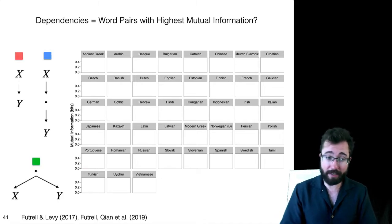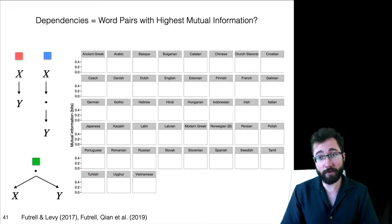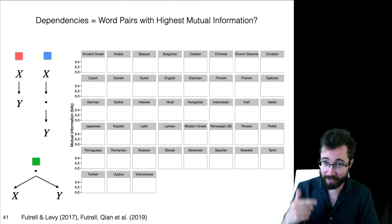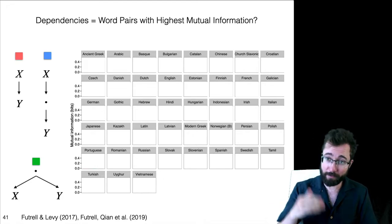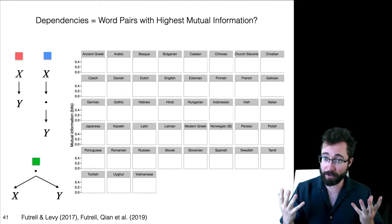So what I'm going to show here is the empirical mutual information among word pairs in a number of different kinds of relationship. In red, we have words in a direct head-dependent relationship. In blue, we're going to have words in an indirect dependency relationship. In green, we're going to have words that are both sisters, they are dependents of the same head.